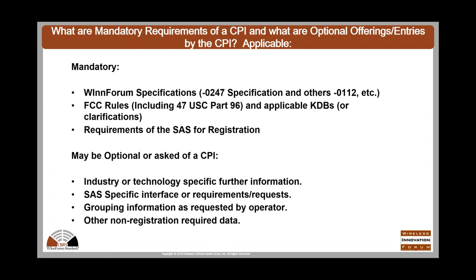The mandatory requirements of a CPI are to meet WinForum specifications TS-0247 and TS-0112, the FCC rules including 47 USC Part 96, applicable KDB clarifications, rule changes, and SAS registration requirements. There may also be optional things asked of the CPI, such as industry or technology-specific information, SAS-specific interfaces or requirements, grouping information as requested by an operator, or other non-registration required data. TPAs have the option to train optional information, ranging from RF 101 to SAS-specific interfaces.